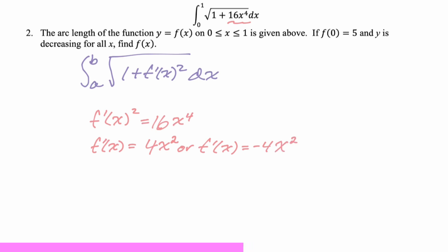But if we go back to the given, we know that we're between zero and one, which I don't actually think really matters in this case, but it could have mattered. But decreasing for all x, so since we're decreasing for all x, we need the one that's going to give us negative values between zero and one. And f prime equals negative four x squared does that.